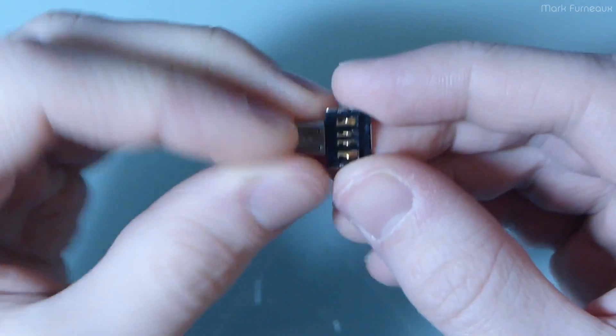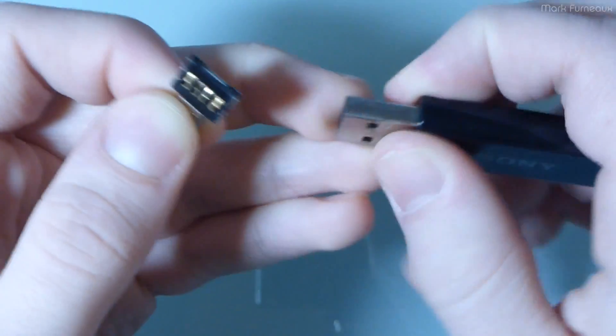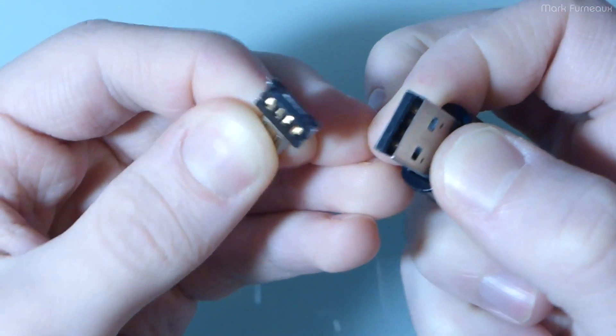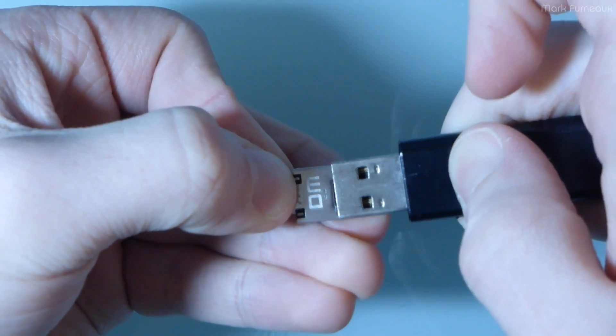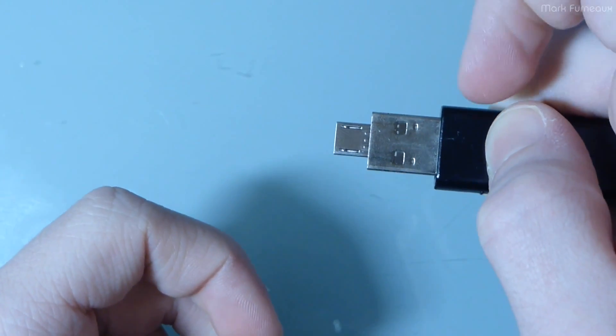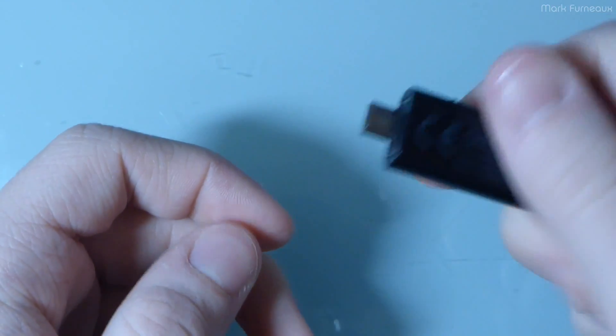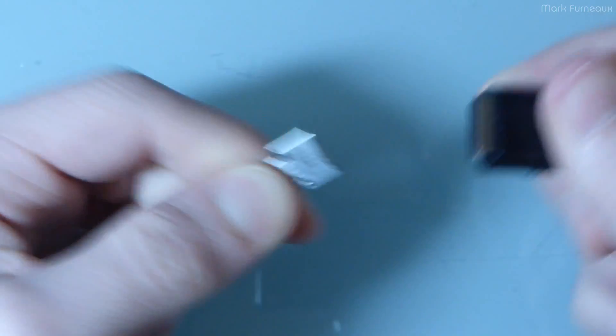And the way that this thing works is it goes inside the USB A connector. This is a broken flash drive, it doesn't click anymore, so I've got to hold it, but basically it's just got four pins and it goes inside the USB connector like that. And then you've got your micro USB on this side, which then goes into your phone. And then you can just pull it out at the end.